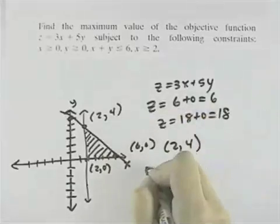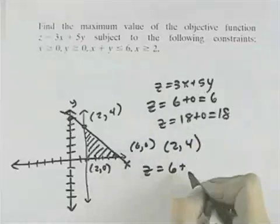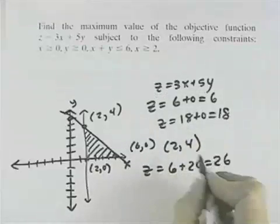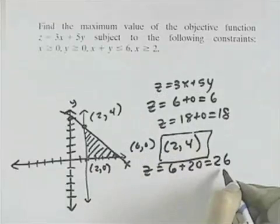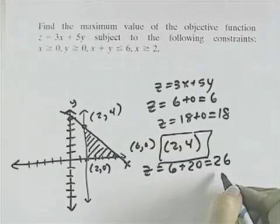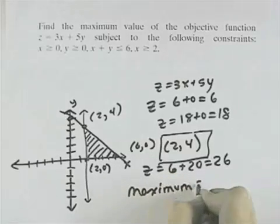for the point 2, 4, we'd have z equals 3 times 2 is 6 plus 5 times 4 is 20, which is 26. And we can see that that point is the maximum value for our objective function. So that means that the solution we're looking for would be a maximum value of 26.